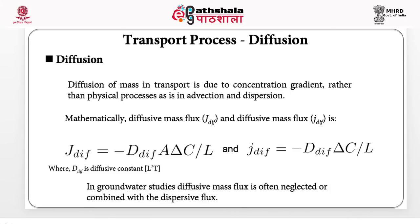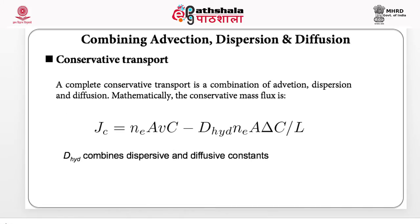In groundwater studies, therefore, we combine dispersive flux and diffusive flux. So when we combine these fluxes — advection, dispersion, and diffusion — we obtain a conservative mass flux. This can be represented as J_C, where the conservative mass flux equals the advective mass flow rate plus the dispersive mass flow rate plus the diffusive mass flow rate. Here we have combined dispersive and diffusive using a common coefficient called the hydrodynamic dispersion coefficient.